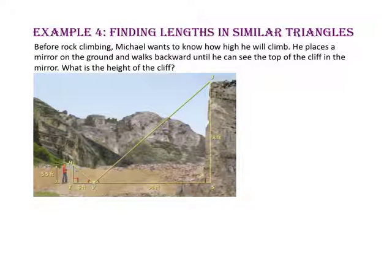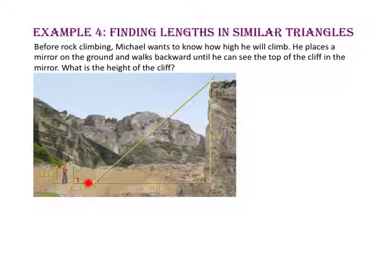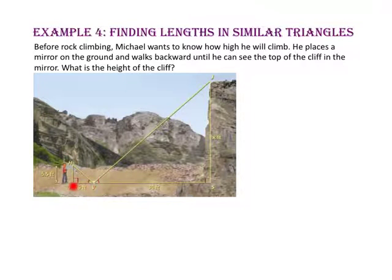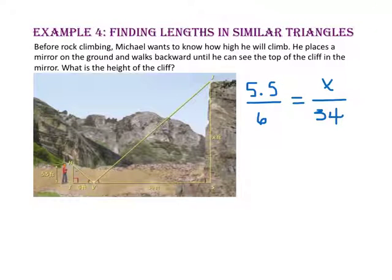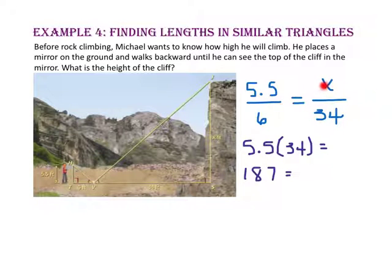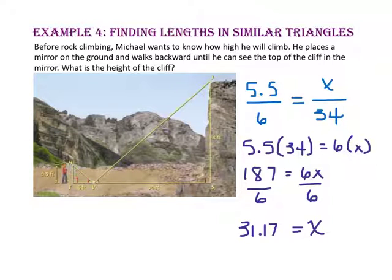In example 4, we will find lengths in similar triangles. Before rock climbing, Michael wants to know how high he will climb. He places a mirror on the ground and walks backward until he can see the top of the cliff in the mirror. By doing this, he has formed two similar triangles. Let's write a proportion comparing the height of Michael to his distance from the mirror, to the height of the cliff and the cliff's distance from the mirror. Using the cross products property to solve for x — multiplying the extremes and then the means — we divide both sides by 6, and x equals approximately 31.17. So the height of the cliff is approximately 32 feet.